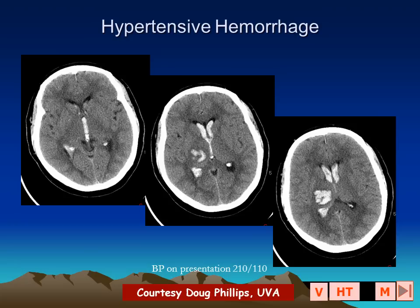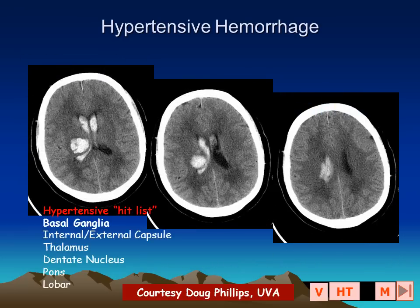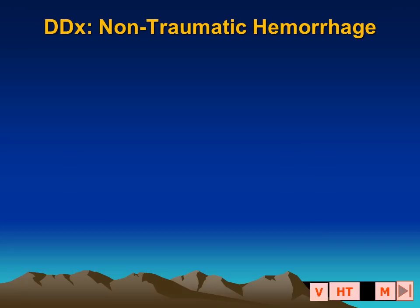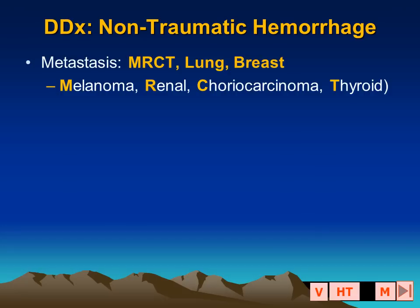When the hypertensive hemorrhage extends into the ventricle, the incidence of fever, seizures, and poor clinical outcome are much higher, as seen in this patient with a thalamic hemorrhage — this time on the right side — with clear extension of hemorrhage into both lateral ventricles.